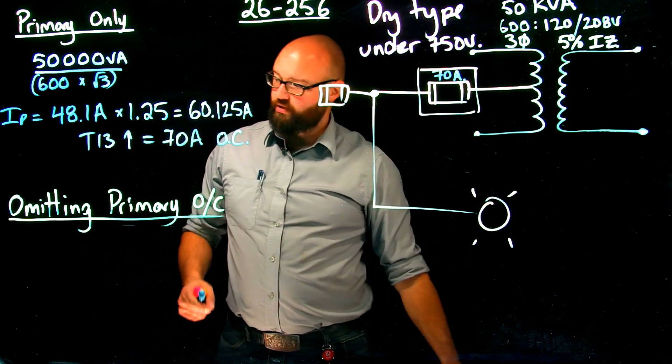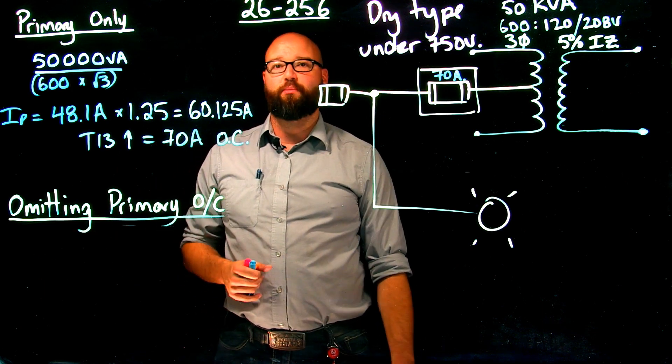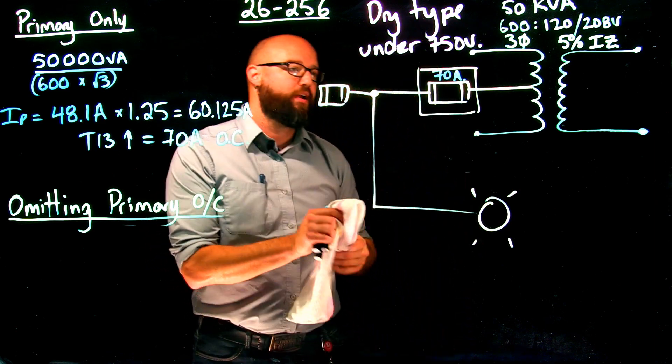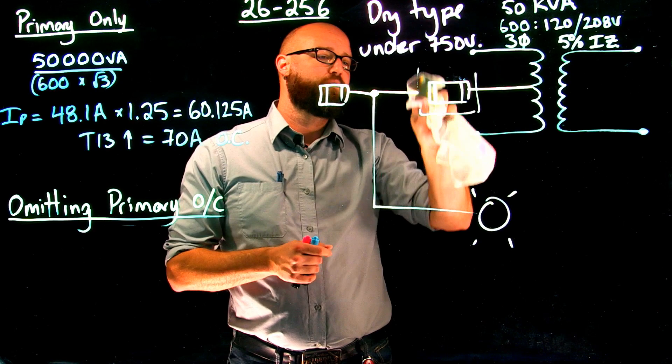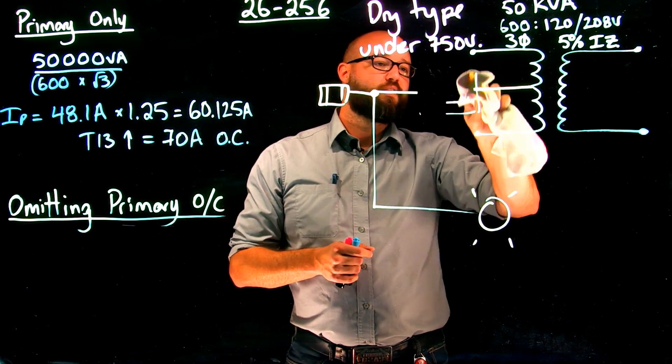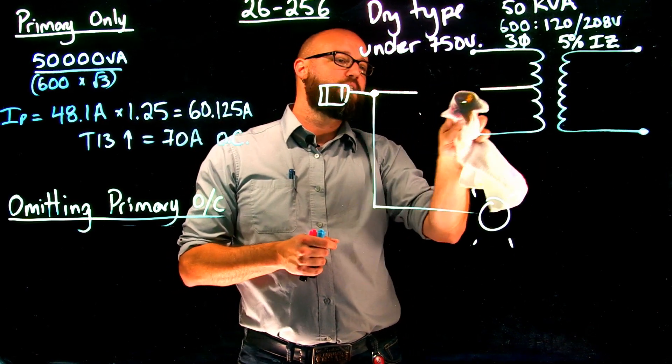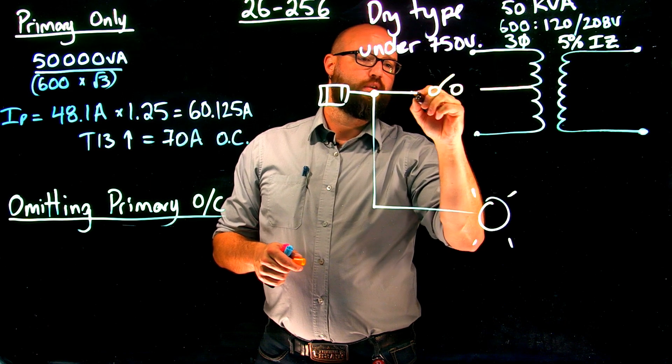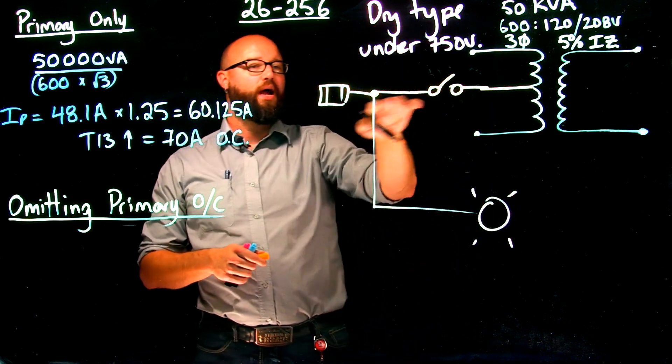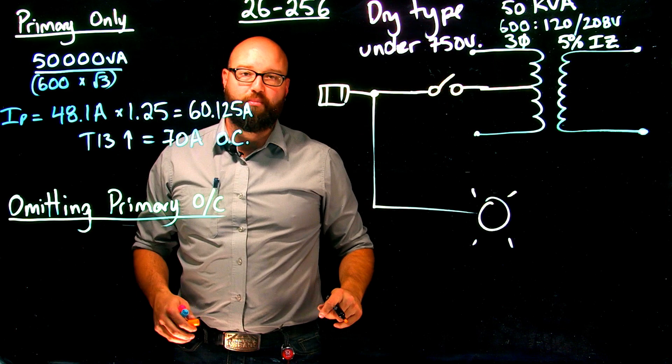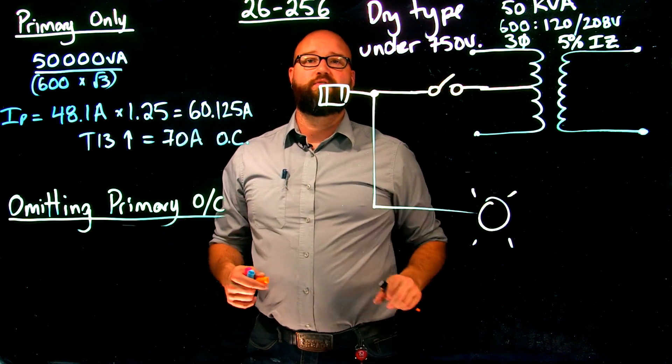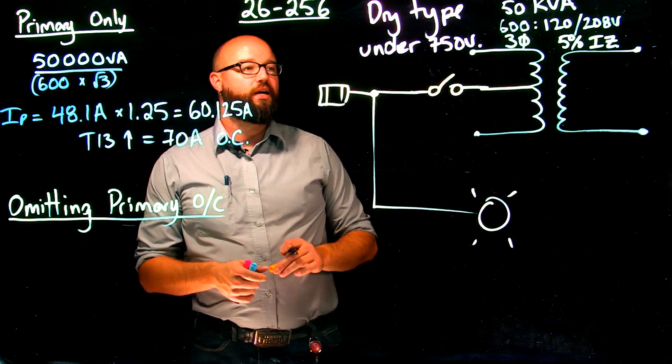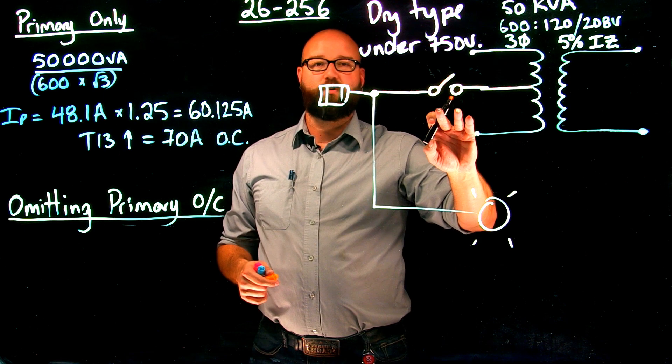So if we move to omitting our primary overcurrent, just like in the previous video, if I was to remove this primary overcurrent, we're going to get rid of that right now. 26-250 tells me, again, I still have to have some type of disconnecting means in here. Maybe it's, again, we'll just use an unfused disconnect. We want to know what happens if we get rid of that primary, or are we allowed to get rid of that primary? We are, according to subrule 2, 26-256, and it gives us the actual multipliers right in the rule. Subrule 2 tells me that if we are going to omit primary protection, which we're allowed to do, I must have a secondary overcurrent.